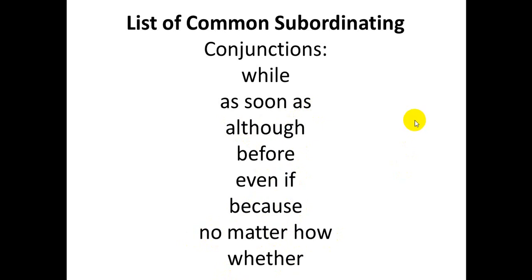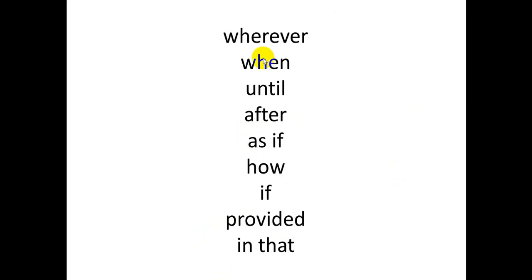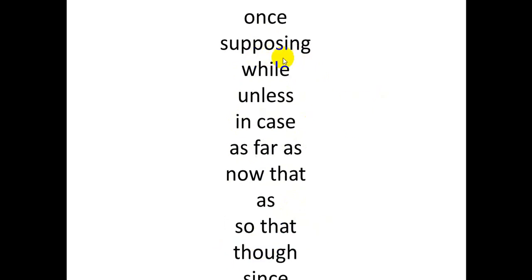Practice these subordinating conjunctions: wherever, whenever, when, until, after, as if, how, if, provided, in that, once, supposing, while, unless, in case, as far as, now that, as, so that, though, since. These are all subordinating conjunctions — different from coordinating and correlative conjunctions.